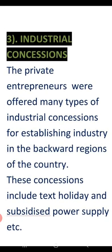Next: industrial concessions. Private entrepreneurs were offered many types of industrial concessions, such as tax holidays, subsidies, power supply, etc. These concessions were given so that more and more industries could be set up. So this was IPR 1956.